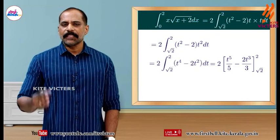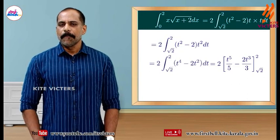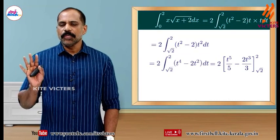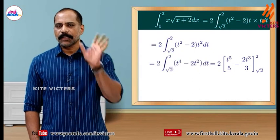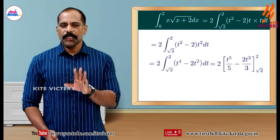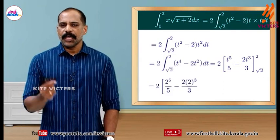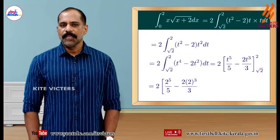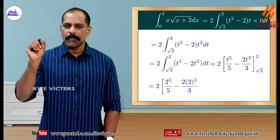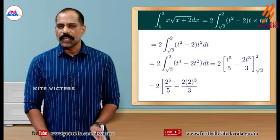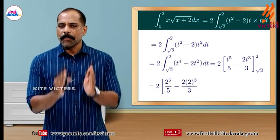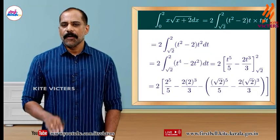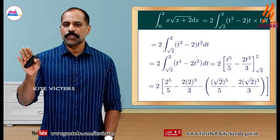We evaluate: 2 into bracket t raised to 5 by 5 minus 2 into t cubed by 3, with upper limit 2 and lower limit root 2. Substituting the upper limit: 2 raised to 5 by 5 minus 2 into 2 cubed by 3, then subtracting the lower limit root 2 terms.